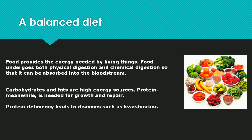A balanced diet — food provides the energy needed by living things. Food undergoes both physical digestion and chemical digestion so that it can be absorbed into the bloodstream. In our digestion part, we have covered physical digestion and chemical digestion in detail.